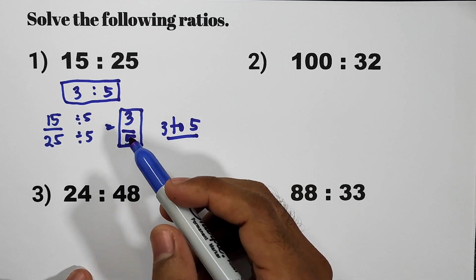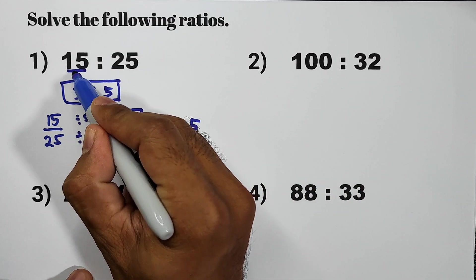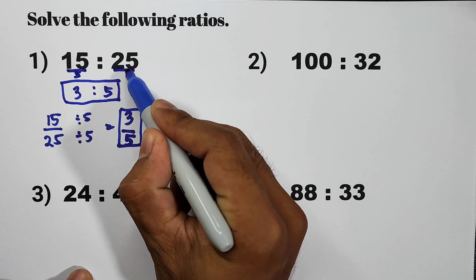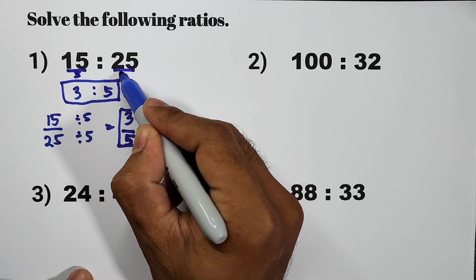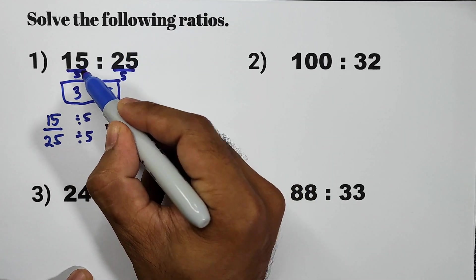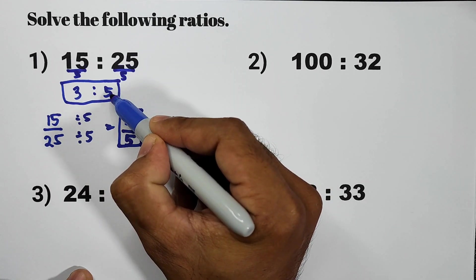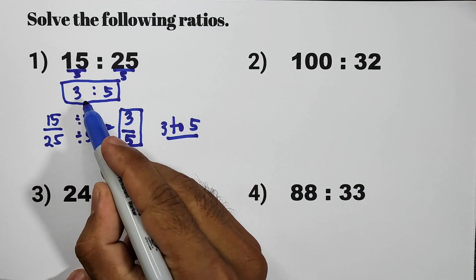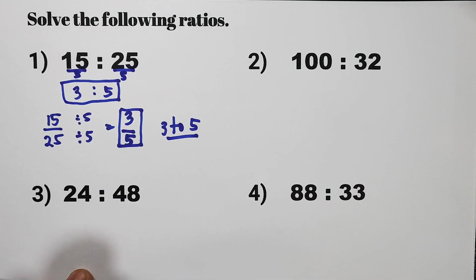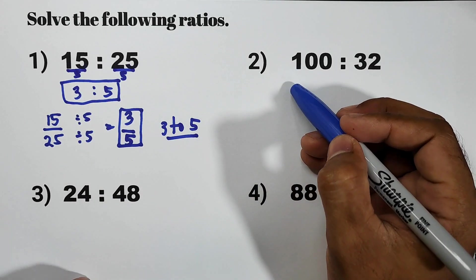The easiest method here is to divide both sides, which is 15 and 25 by 5. 15 divided by 5, 3. 25 divided by 5, 5. So our answer is 3 is to 5. Next, let us have item number 2.